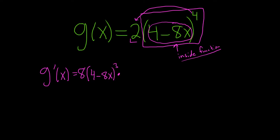Times, and now we multiply by the derivative of the inside piece. In this case the derivative of 4 is 0, and the derivative of negative 8x is simply negative 8.